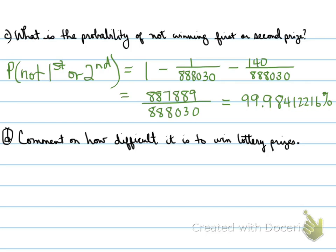Now, comment on how difficult it is to win lottery prizes. To be able to pick those seven numbers, there are 888,030 ways to pick seven numbers. Only one of them would be the right answer. Now, so, you're probably not getting first or second. You're most likely not to get first or second based on those percentages.